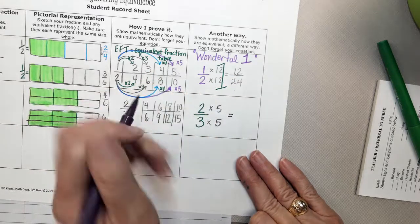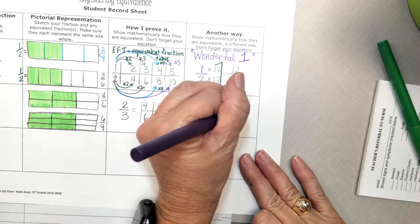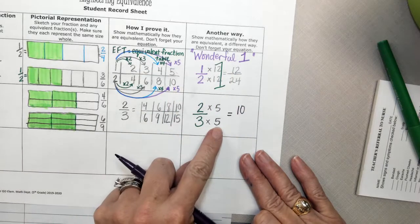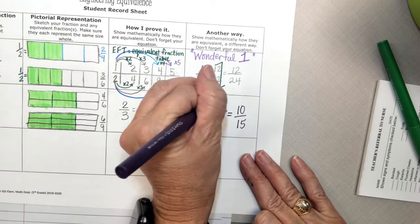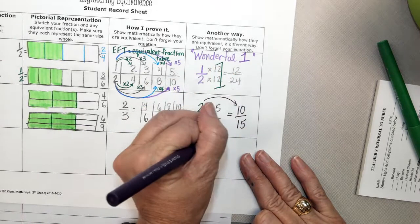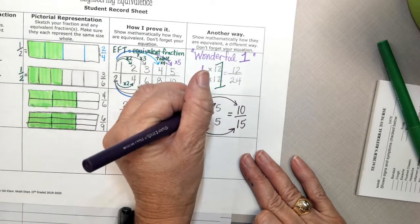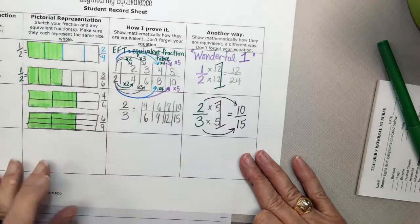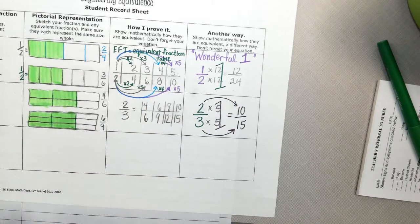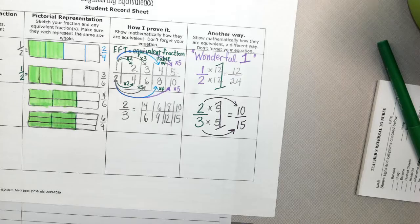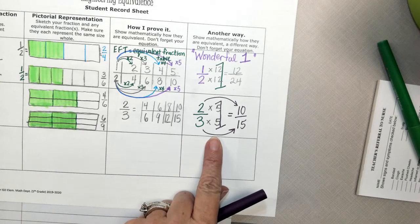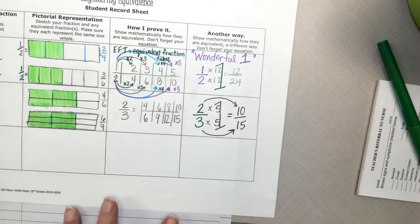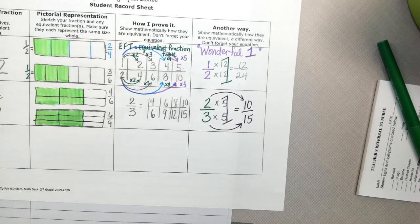And when we do that, what's 2 times 5 going to give you? 10. And what's 3 times 5 going to give you? 15. Oh, look. We were able to find an equivalent without even having to make that huge EF train, right? Which way do you like better? The 1. Wonderful 1. You like number 1? Yeah. It's nice.